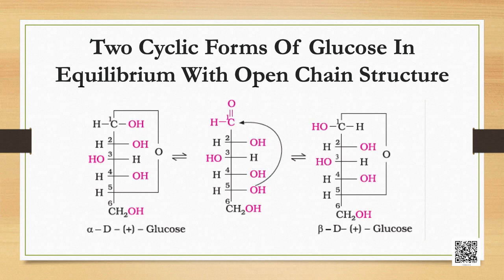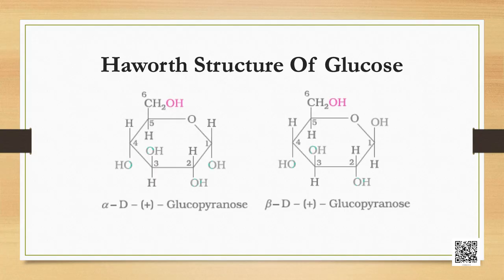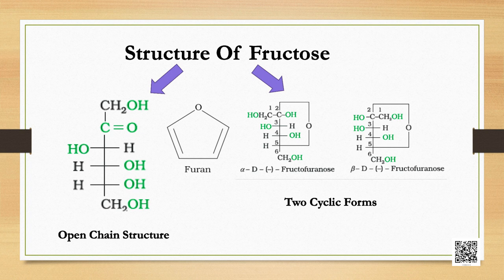It was proposed that one of the OH groups may add to the CHO group and form a cyclic hemiacetal structure. It was found that glucose forms a six-membered ring in which the OH at C5 is involved in ring formation. This explains the absence of the CHO group and also the existence of glucose in two forms. These two cyclic forms exist in equilibrium with the open chain structure. The cyclic structure of glucose is more correctly represented by the Haworth structure.